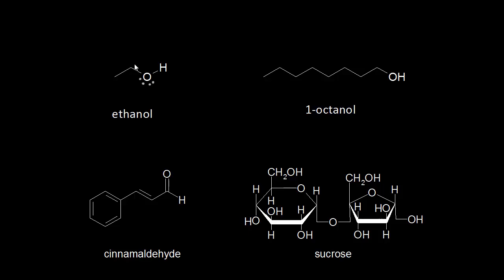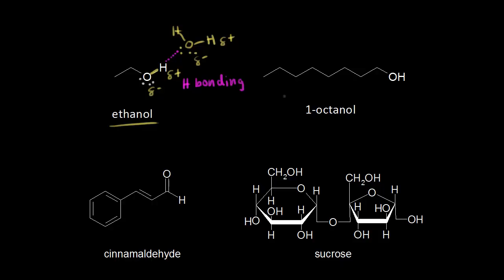Let's look at several organic compounds and determine whether or not those compounds are soluble in water. We'll start with ethanol. Ethanol has a polar oxygen-hydrogen bond. The oxygen is more electronegative than hydrogen, so the oxygen withdraws some electron density, making the oxygen partially negative and leaving the hydrogen partially positive. If water comes along — we know that water is a polar molecule with a partial negative oxygen and partial positive hydrogens — we can see there's an opportunity for an attractive force. The partially positive hydrogen on ethanol is attracted to the partially negatively charged oxygen on water. This is an example of hydrogen bonding.